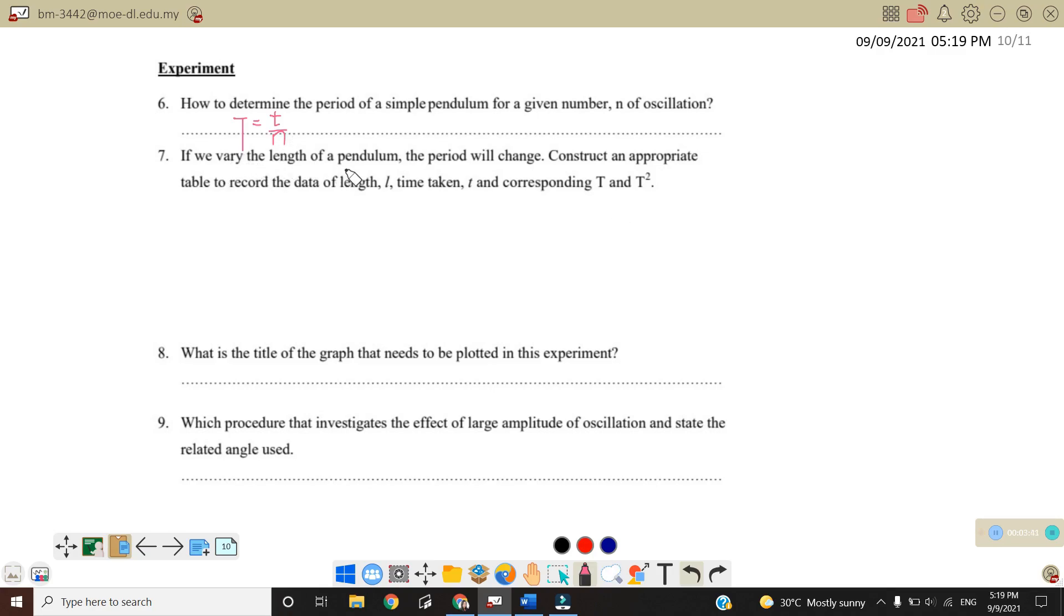Number seven, if we vary the length of the pendulum, the period will change. Construct an appropriate table to record the data of the length, time taken T, and also corresponding T, and also T squared. So what we should do is construct a table. For question number seven, we can construct a table with the first column length with uncertainty 0.1 cm, time taken T plus minus 0.01 second. This depends on what is the uncertainty, the smallest division that you can read from your stopwatch. And then capital T here is the period. So period is the time taken over how many oscillations that you did, and the unit is in second. And finally we will find T squared and the unit is S squared.